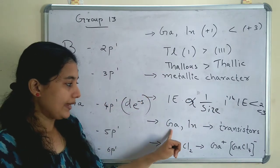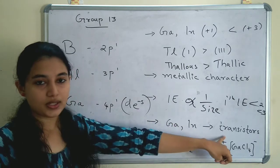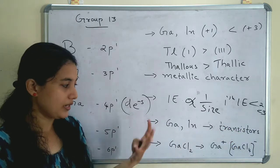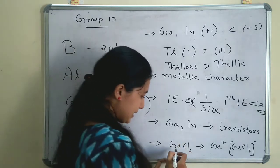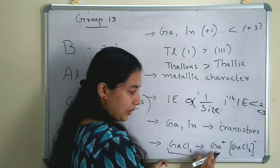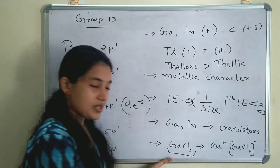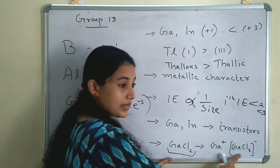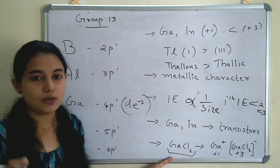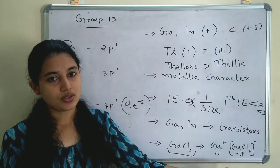Gallium and indium are used for making transistors. Indium is used for making PNP transistors and gallium is used in transistors as well. An important point: GaCl2 gallium chloride can be written as Ga+ and GaCl4−. So here gallium is in plus 1 oxidation state and plus 3 oxidation state simultaneously in the same compound.